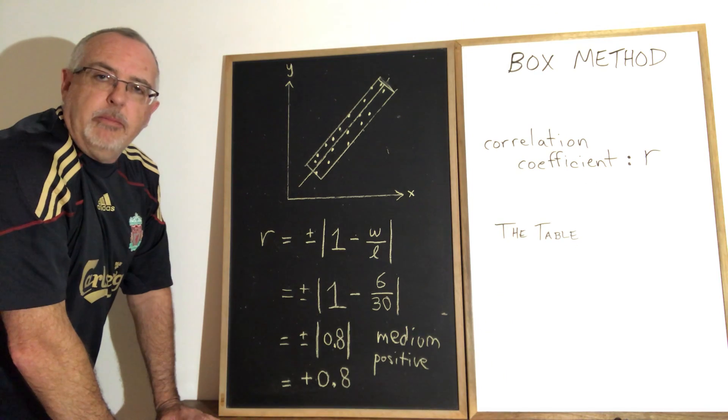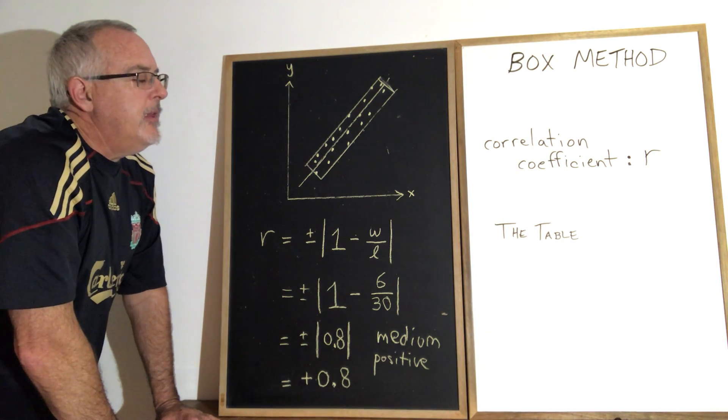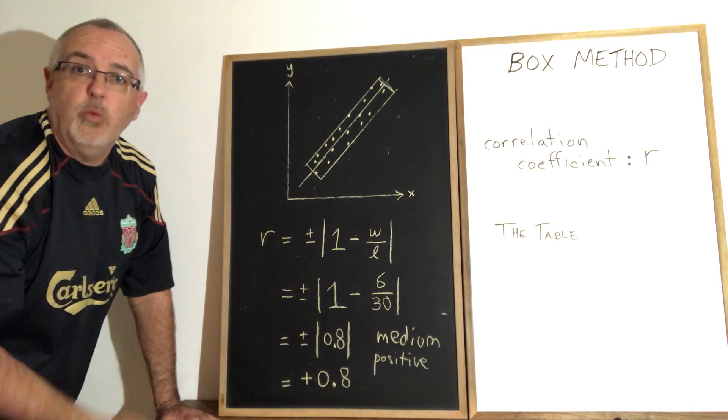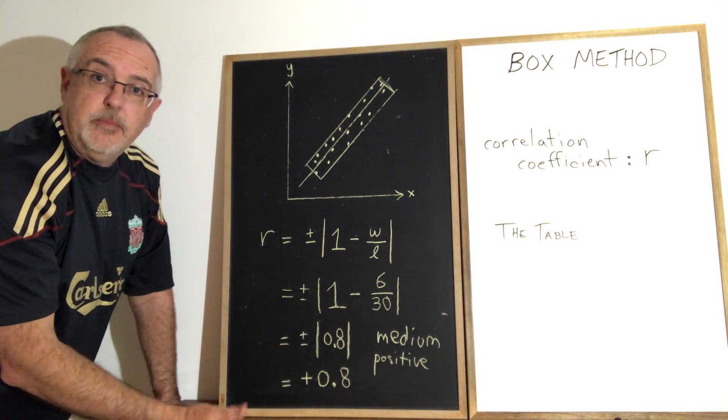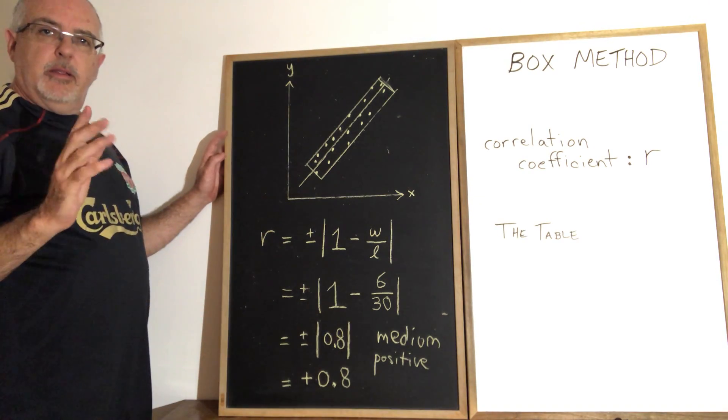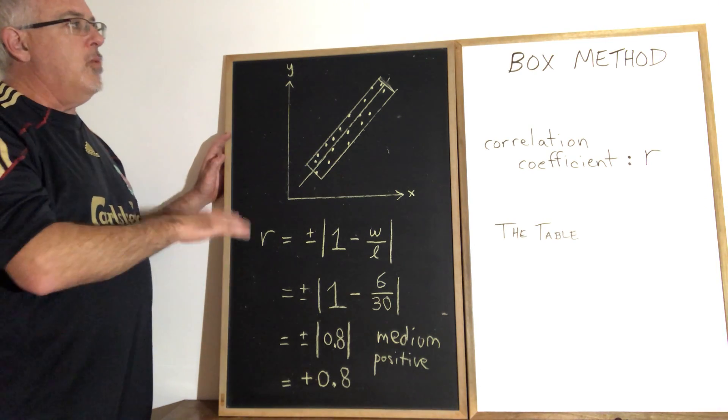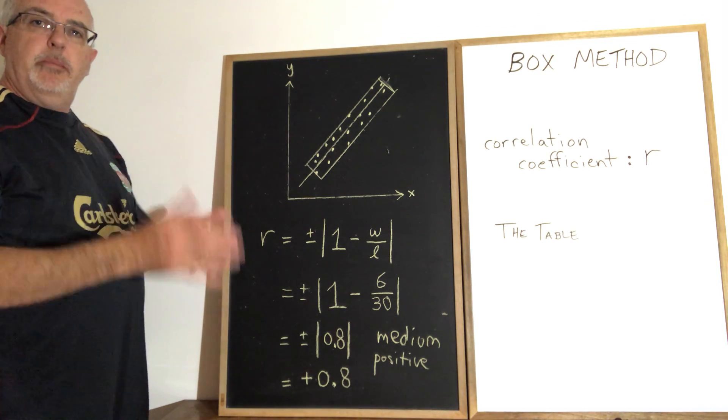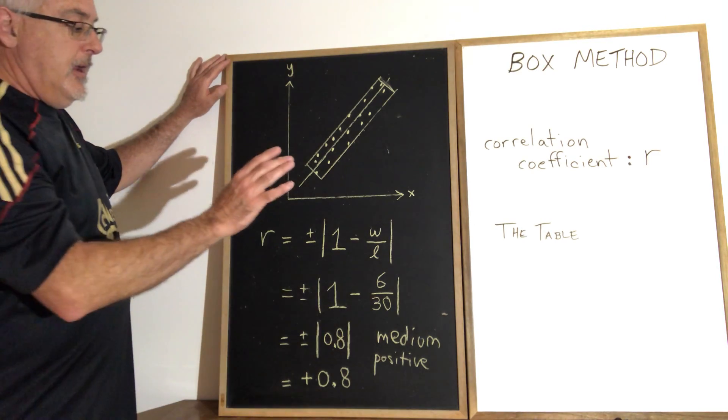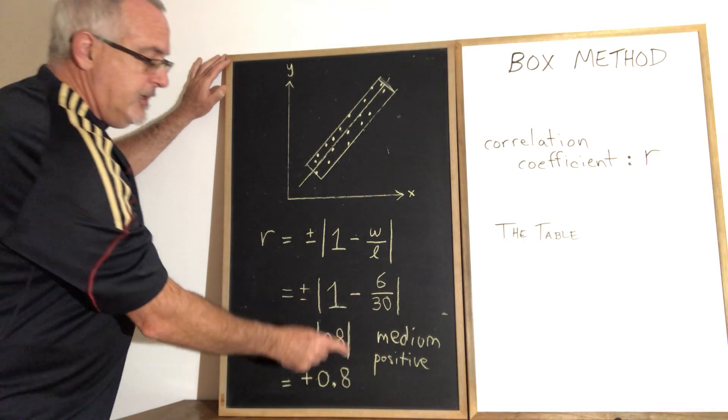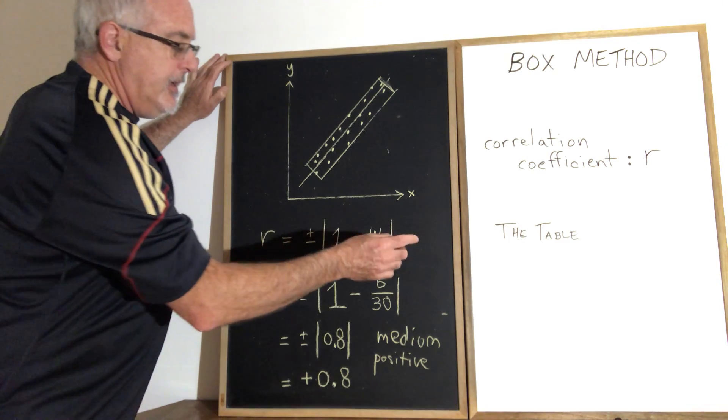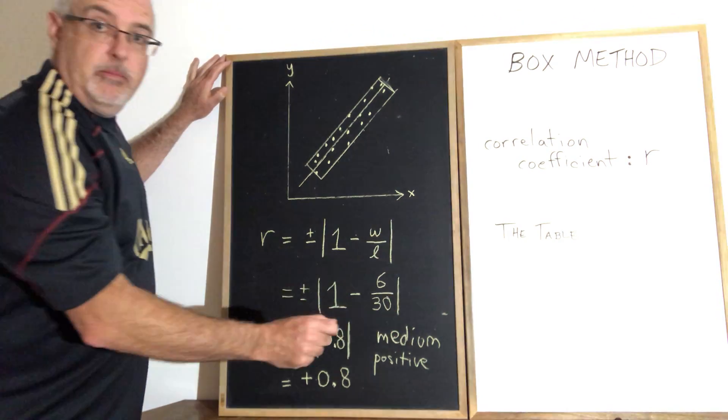The medium part is what we get from the table. There is a table that students use to judge whether their correlation is strong, very strong, medium, weak, or non-existent. I don't want to go into too much detail about the table because there's more than one table. Depending on which course you're taking, where you're studying this, you might be using a different table than my students have to use. In the table that my students have to use, 0.8, because it's between 0.75 and 0.85, is considered medium correlation.